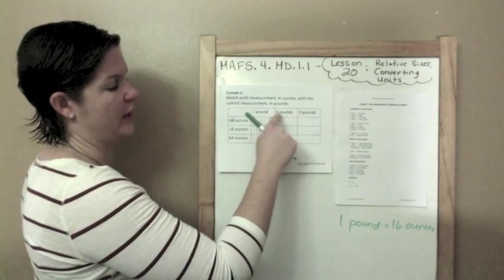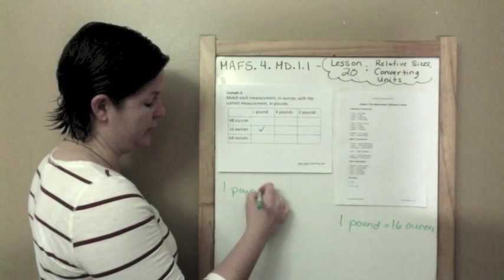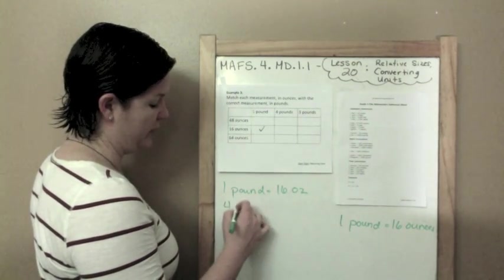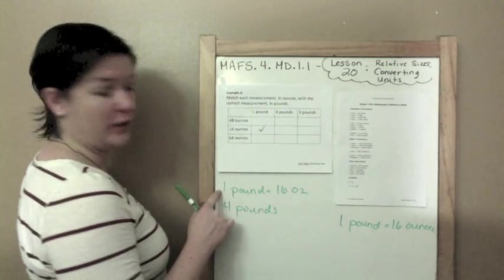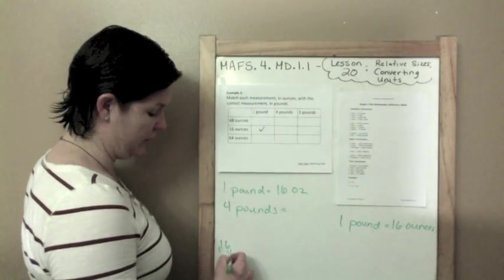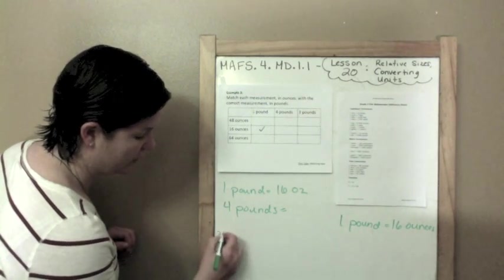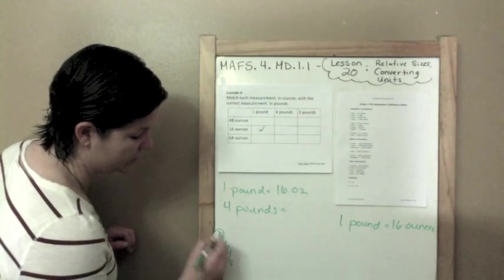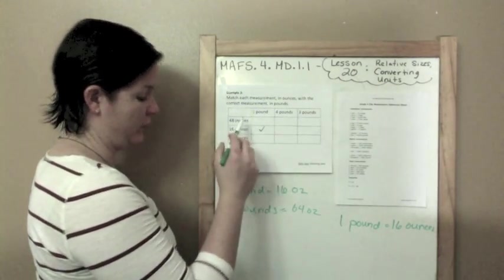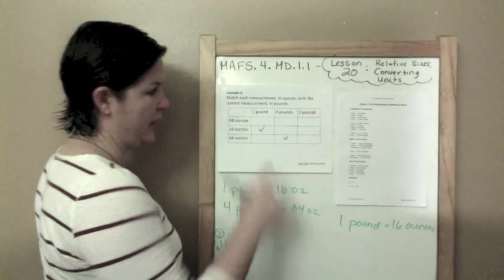Now let me see, I'm going to start from the top. Let me see how many 4 pounds is. If 1 pound equals 16 ounces, then 4 pounds, here I'm multiplying by 4, so I need to multiply 16 times 4, which I need to do here. 16 times 4. 6 times 4 is 24, carry the 2. 1 times 4 is 4, plus 2 is 6. So 64 equals 64 ounces. So 4 pounds is 64 ounces. This is where they meet.